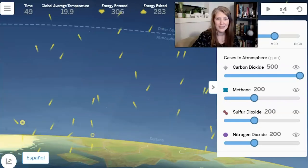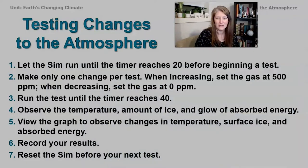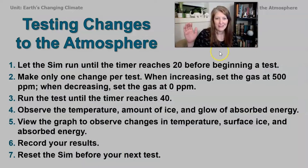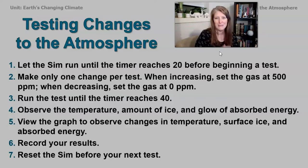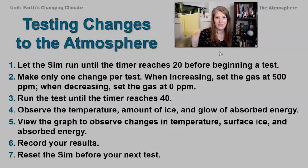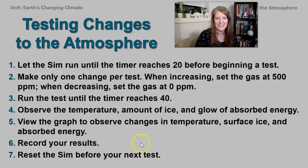Now it's your turn to go explore the sim. You're going to run eight tests — one for each of the four gases where you increase the parts per million to 500, and then four tests where you decrease each gas down to zero parts per million. Record each one in a notebook, then come back to this video and we'll take a look at some of our data together.